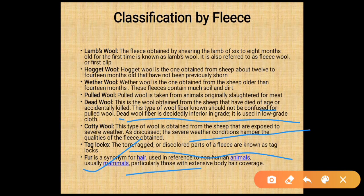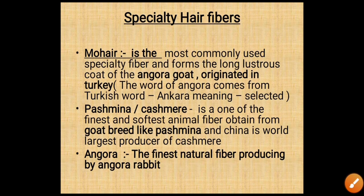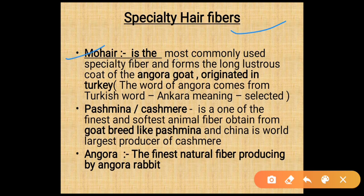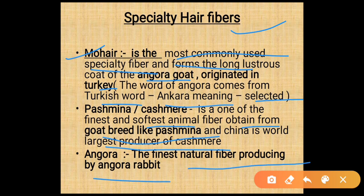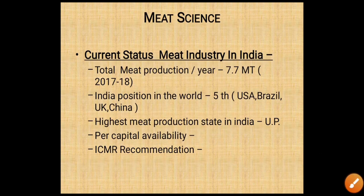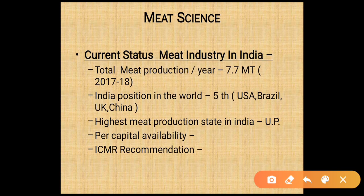Specialty hair fibers: mohair is the most commonly used specialty fiber, from the long lustrous coat of Angora goat, originated in Turkey. The word 'Angora' comes from a Turkish word meaning 'selected.' Pashmina or Kashmiri is one of the finest and softest animal fibers, obtained from a goat-like breed. China is the world's largest producer of Kashmiri. Angora is the finest natural fiber produced by the Angora rabbit.